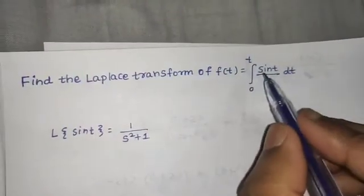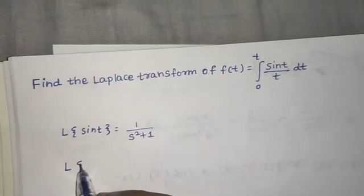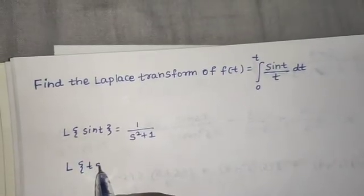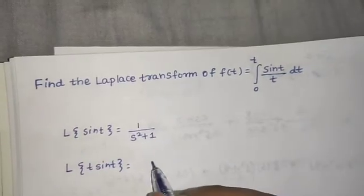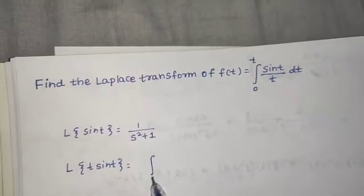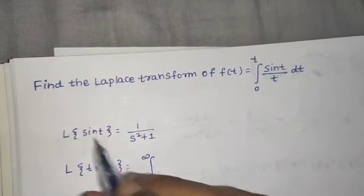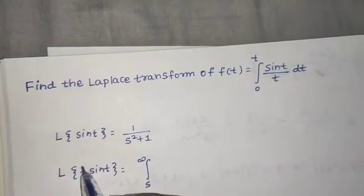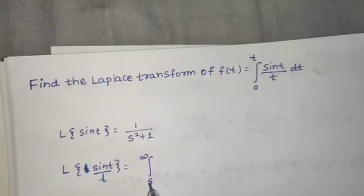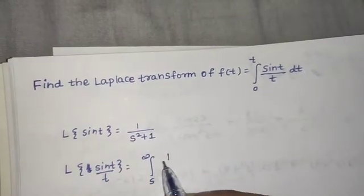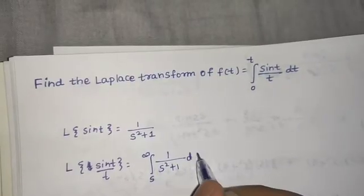Now we can use the division by t property. The Laplace of sin(t)/t will be the integral from s to infinity of whatever we got for the Laplace of sin(t). For division by t, we integrate from s to infinity of the previous result — that is 1/(s² + 1) with respect to s.